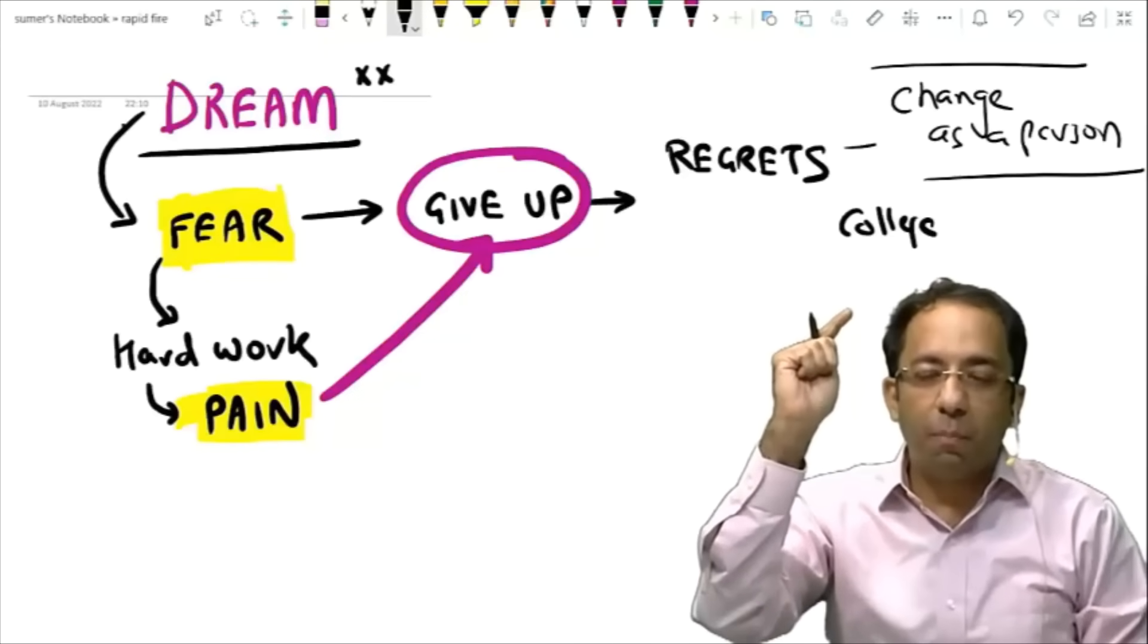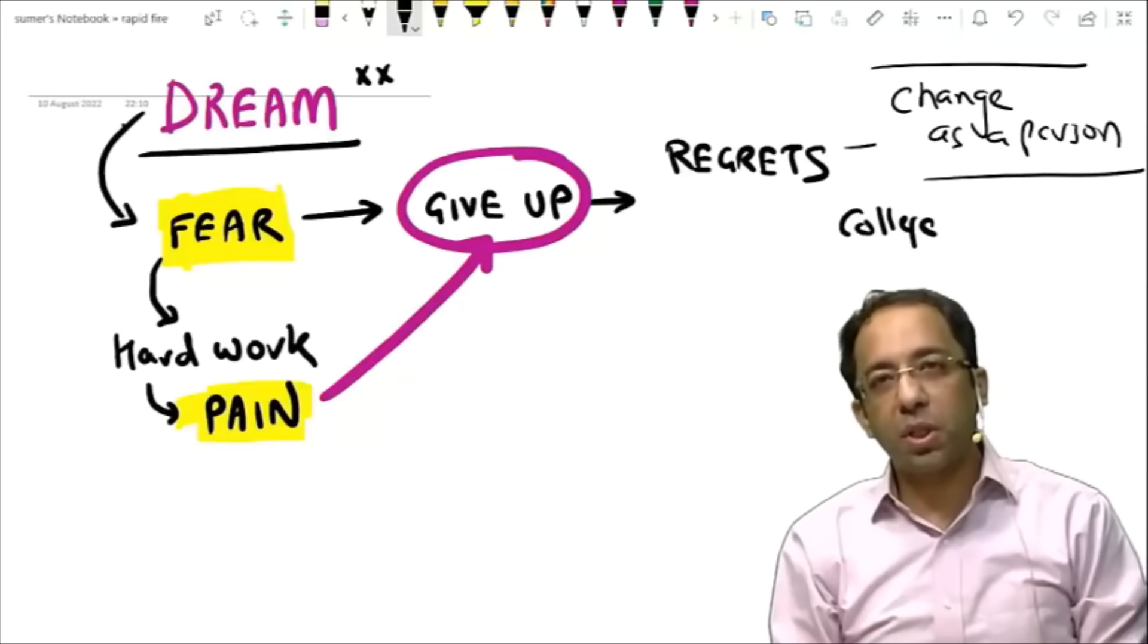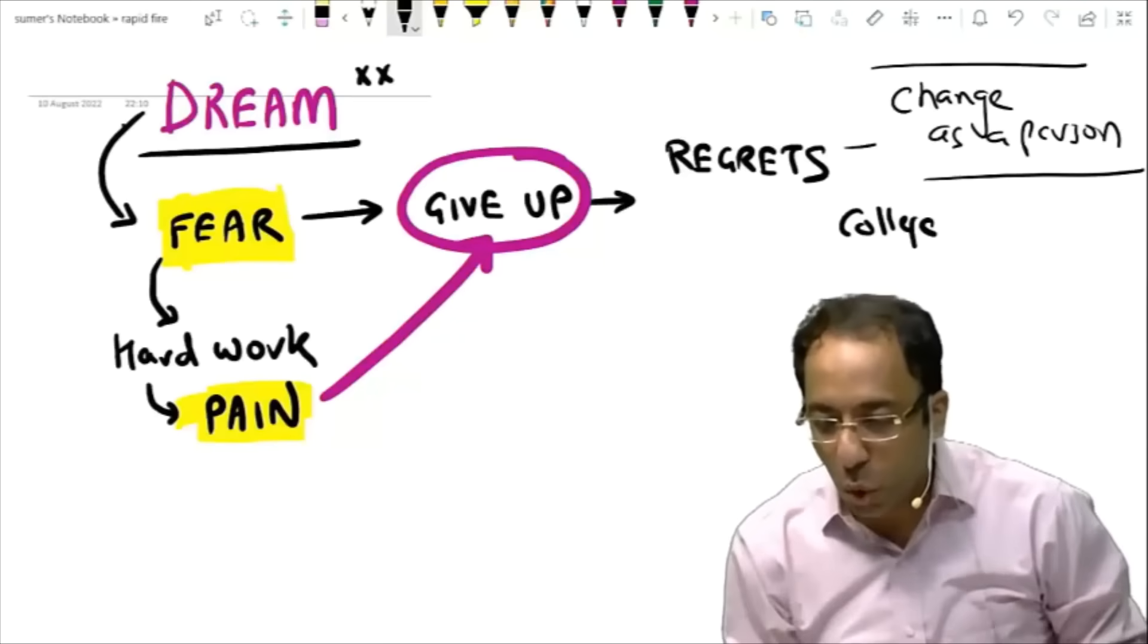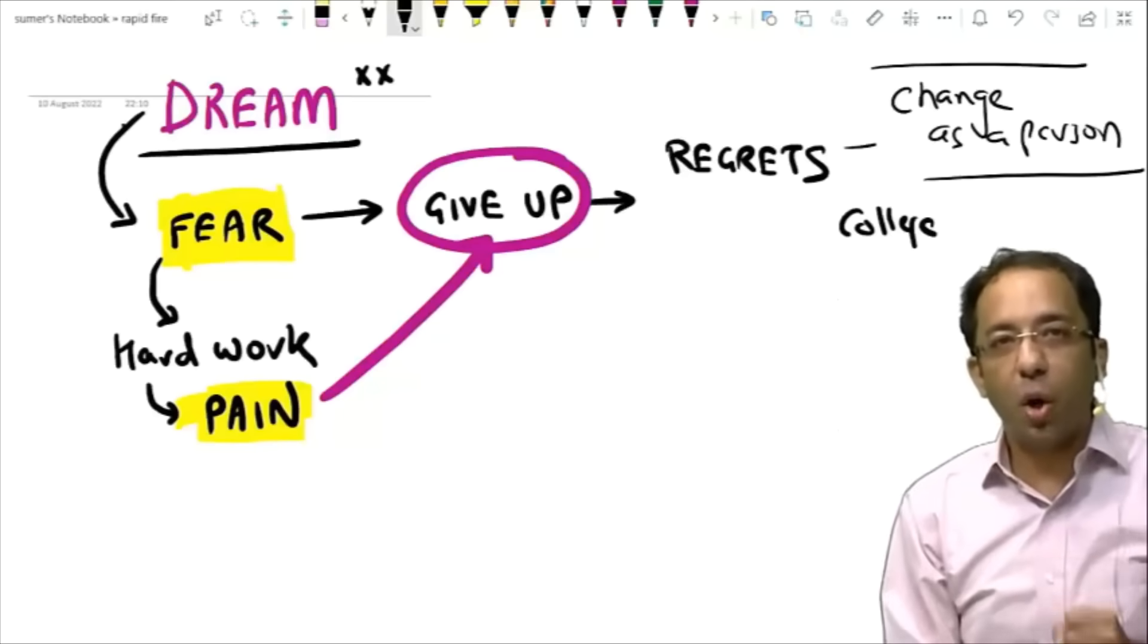So regrets are the worst poison to accumulate in your system. Because if you have regrets you change as a person. So do not give up because of fear or pain.